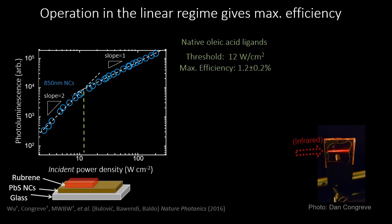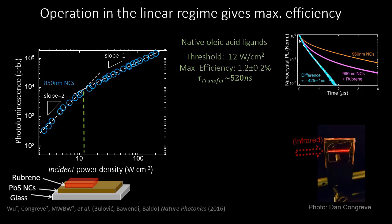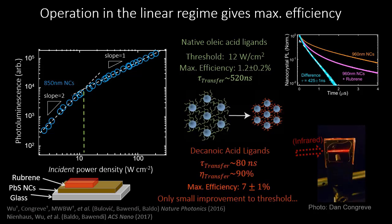As a physical chemist, you ask: why isn't it better? We looked at transfer at the interface and found that this Dexter transfer — the double electron exchange between the quantum dot and the surface materials — is very slow but can be extremely efficient, particularly if you shorten the ligands, which accelerates it and gives reasonable efficiency. Although we could improve the efficiency recently and the organic film worked pretty well, we couldn't improve the threshold well. It was hard to thicken the lead sulfide nanocrystal layer to absorb enough light to get this working at truly low intensities.